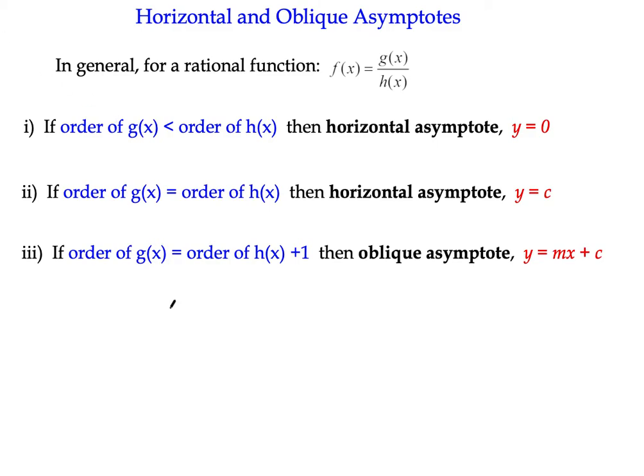Hi, welcome to our functions and graph topic. We're doing example 12 just now. We've been looking at asymptotes, which we covered in examples 10 and 11. So if you didn't check out that introduction, I would suggest you do so. We were looking at vertical asymptotes. So what we're going to have a look at in these next few examples are the non-vertical asymptotes.